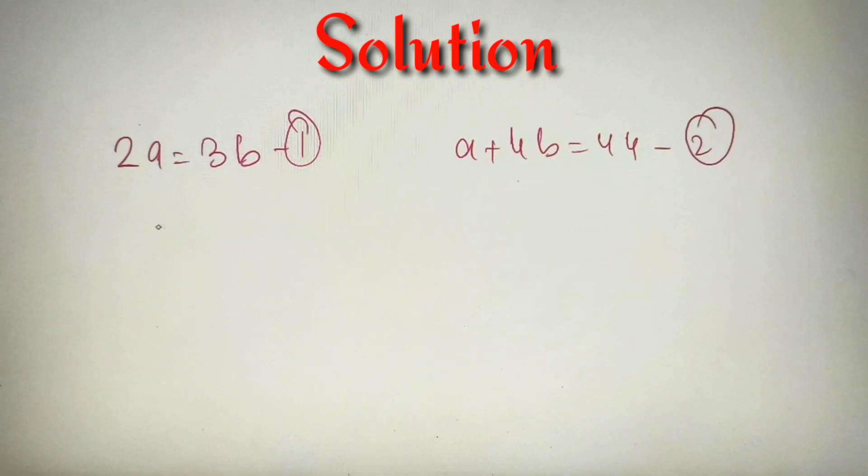According to our previous calculations, we have got these three equations: 2A = 3B and A + 4B = 44. By using the first equation, I can say that A = 3B/2.